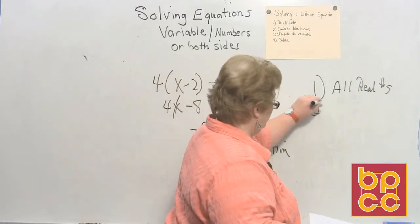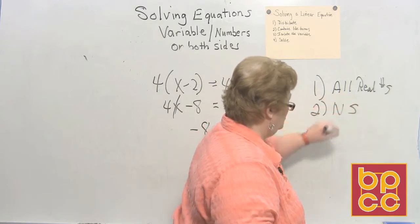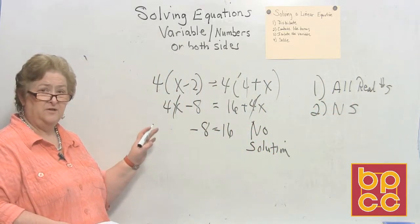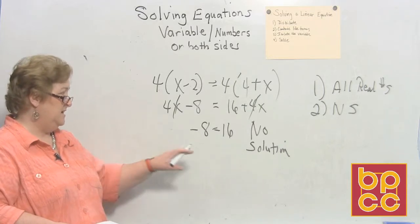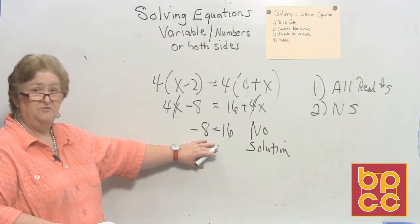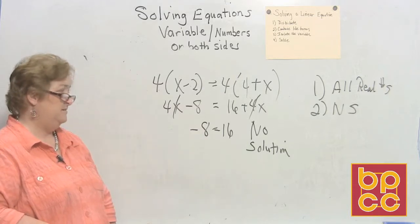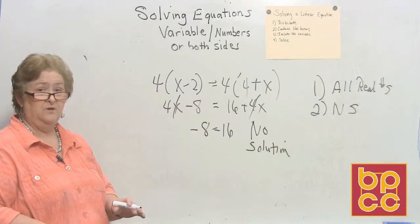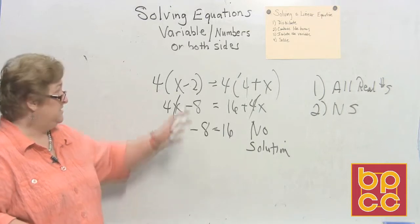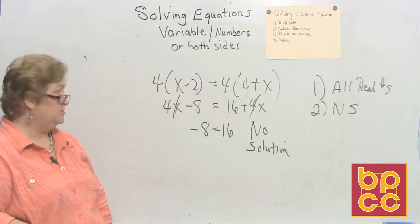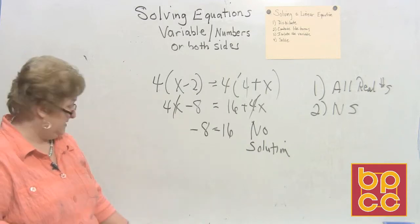So our second type is no solution. If the x's clear out, that's why I always look at my x's first. If the x's clear out, leaving you with two numbers that do not equal, and they do not clear out, then we're going to have to call that no solution. There is no number in our number system that I can put here to make the left side and the right side equal. There is no solution for this equation.